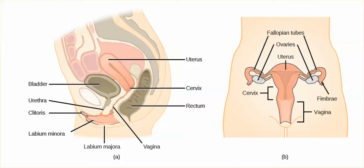This is where we're going to see the release of gametes produced via meiosis, and those are oocytes. At ovulation, an oocyte, or an egg, is released and moves into the fallopian tubes, which carry that gamete to the uterus for possible implantation. The fimbria are finger-like projections on the end of the fallopian tube that drape over the surface of the ovary and help guide the ovulated egg into the fallopian tube.